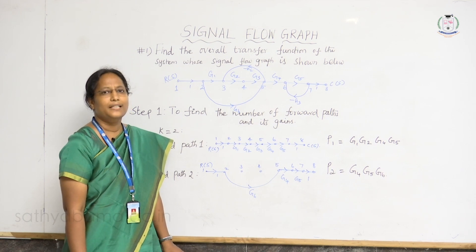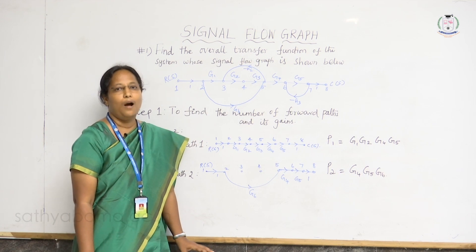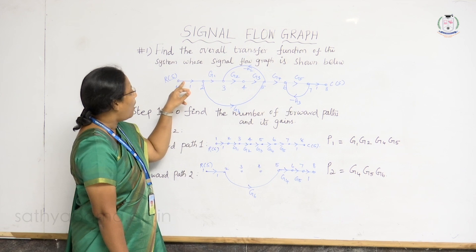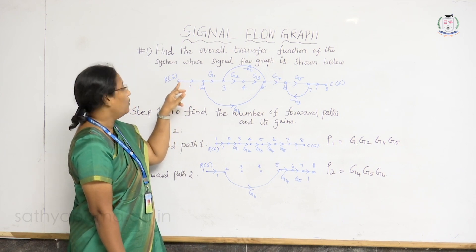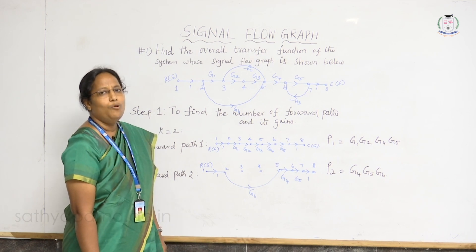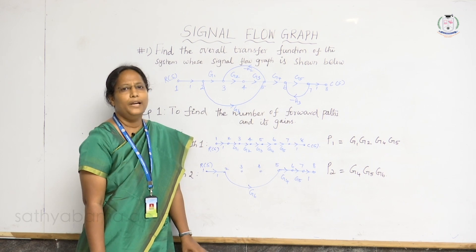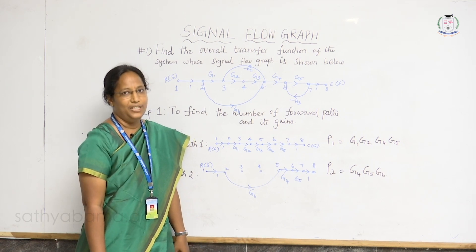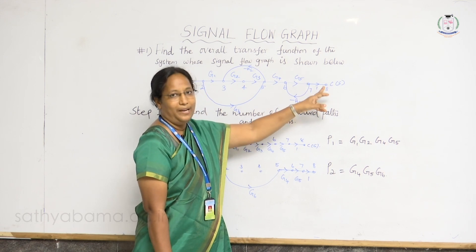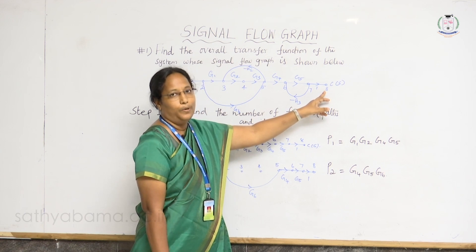The first one is the input node. Input node is a node which has only outgoing branches. Here node 1 has only outgoing branches, so node 1 is called the input node. Another one is the output node. Output node is a node which has only incoming branches. Consider node 8 — it has only incoming branches, so the 8th node is called the output node.